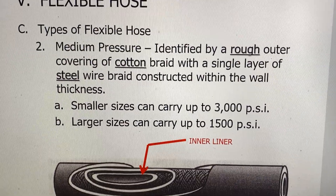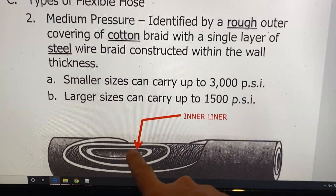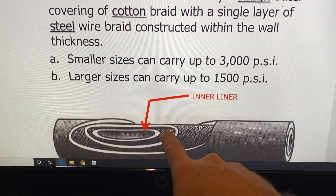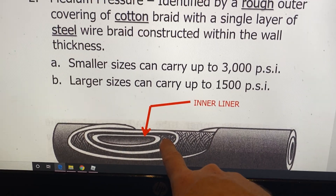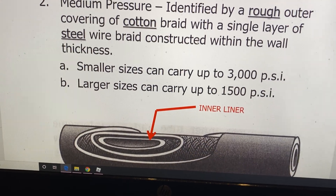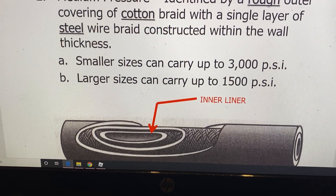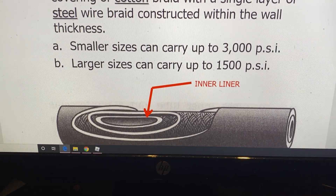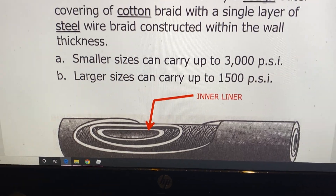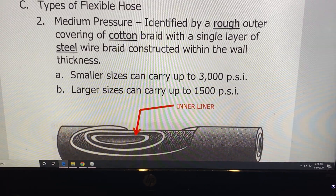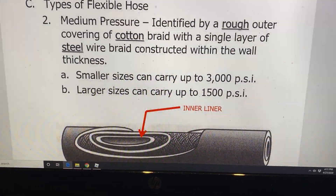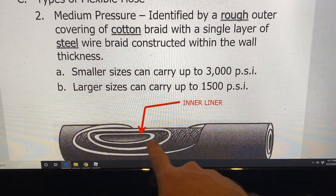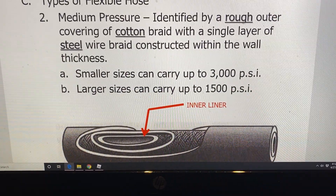The next one is the medium pressure line — the one we'll be doing all our projects on. It's constructed similarly to the low pressure line: it's got the inner liner and a cotton braid, just like the low pressure, but now they add a layer of steel braiding to make it stronger. The reinforcement layer has one additional layer over the low pressure. Another difference is its outer covering — it's rough in appearance. Students will build a medium pressure line in class, install fittings, and pressure check it.